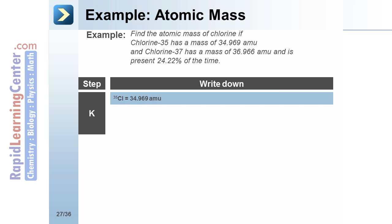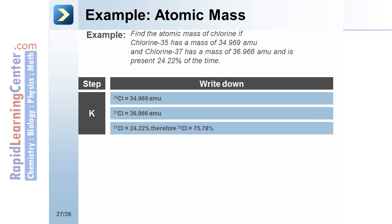Chlorine-35 has a mass of 34.969 amu. Chlorine-37 has a mass of 36.966 amu. Chlorine-37 is present 24.22% of the time. Therefore, we also know how often chlorine-35 is present.